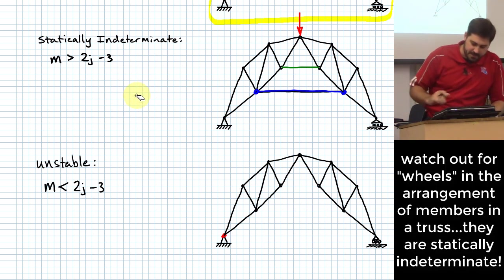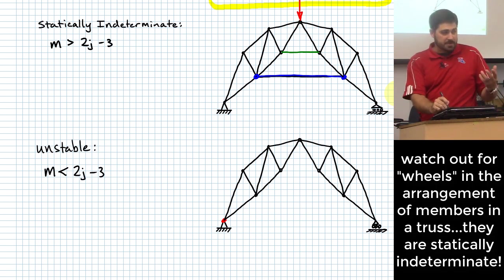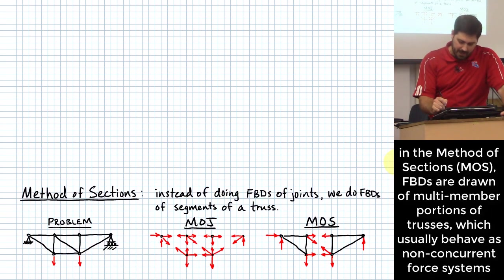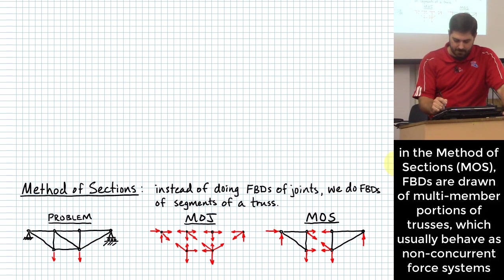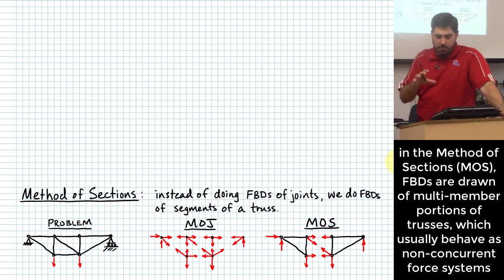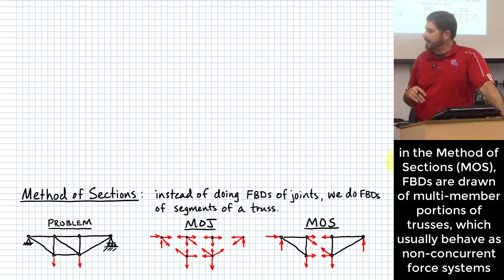Thank you for bearing with me on that — I think it's nice to understand some of these ideas so you know what kinds of structures you'll be able to deal with using our techniques versus those that require something more. Now we're going to get into the method of sections. With the method of sections, instead of doing free body diagrams of joints, we're going to take apart our structure and look at individual sections of the truss.